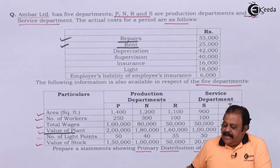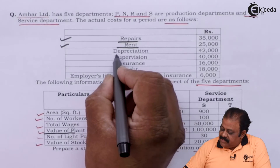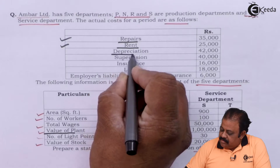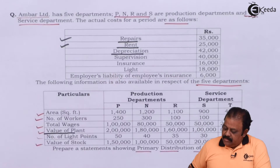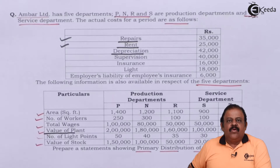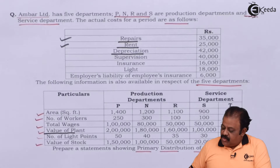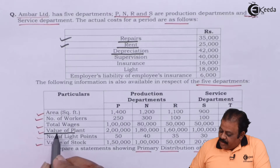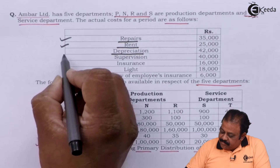The next expense is depreciation. This will also be allocated based on value of plant.